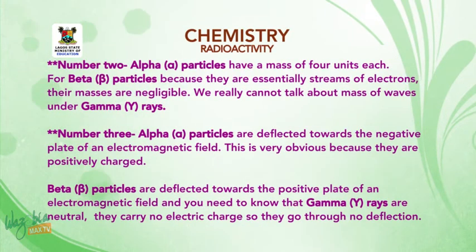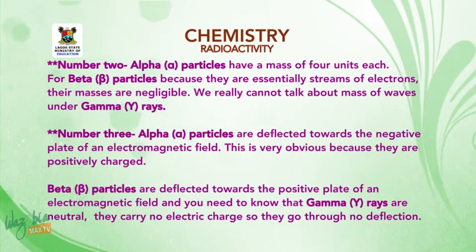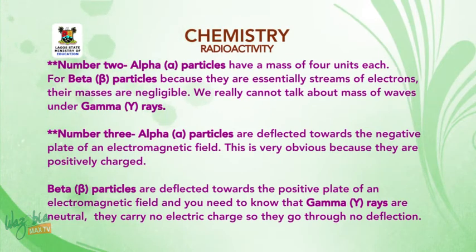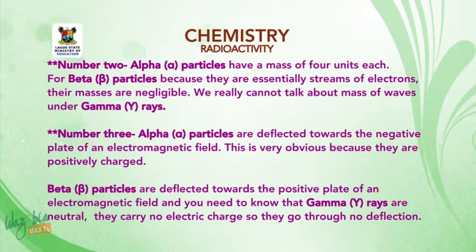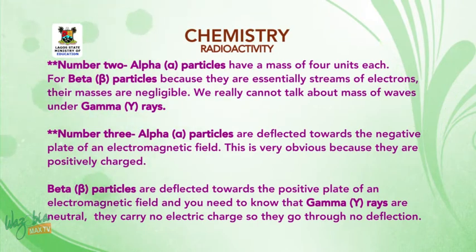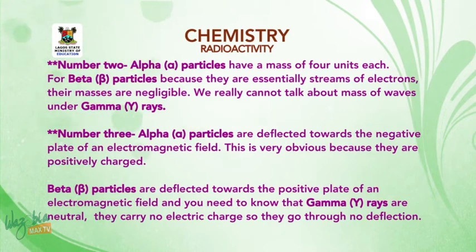Number three: alpha particles are deflected towards the negative plate of an electromagnetic field — obviously because they are positively charged. Beta particles are deflected towards the positive plate of an electromagnetic field. Gamma rays are neutral and carry no electric charge, so they undergo no deflection. Number four: alpha particles have low penetrating power. Beta particles have higher penetrating power than alpha particles. Gamma rays have the highest penetrating power of the three radioactive emissions.